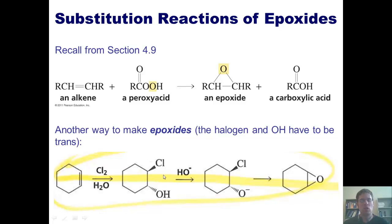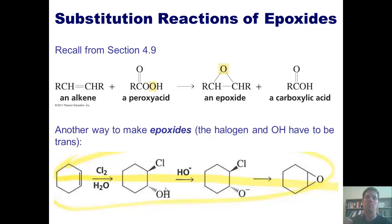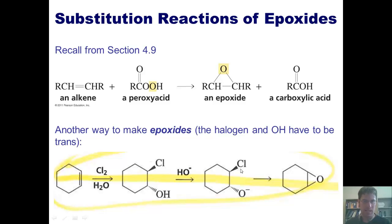Now if these two groups are cis to each other, that cannot proceed, because as we've learned, SN2 mechanisms have to involve the nucleophile attacking from the backside. And this is indeed an SN2 reaction — it's just an SN2 in which both the nucleophile, this O-, and the leaving group, this chlorine, are on the same molecule.